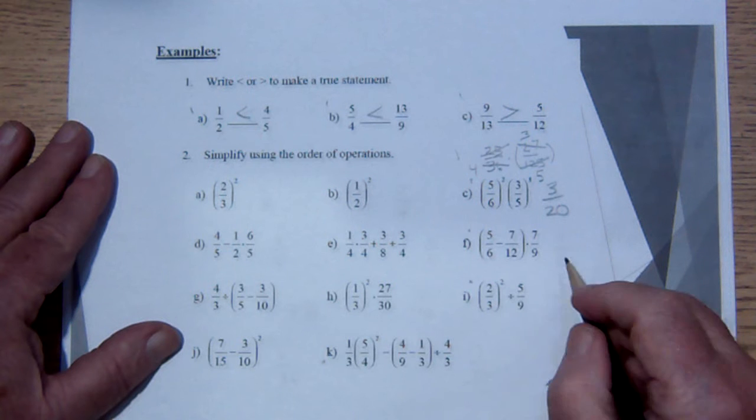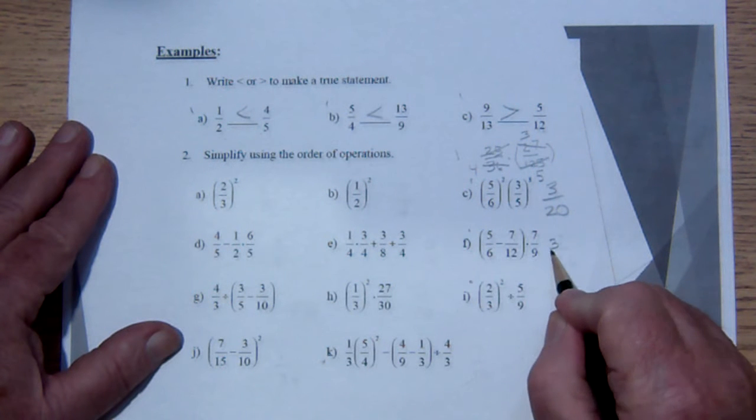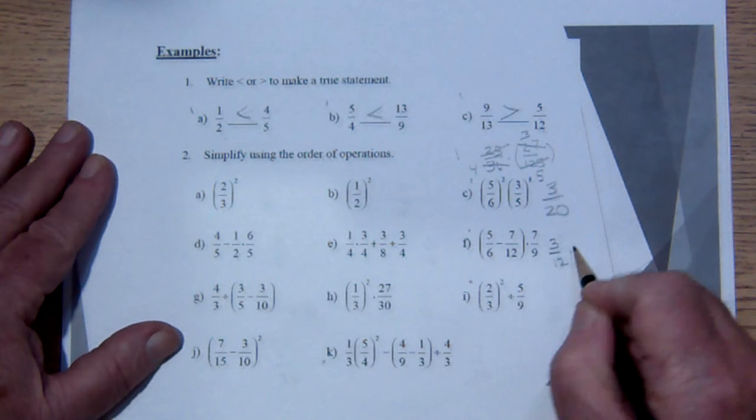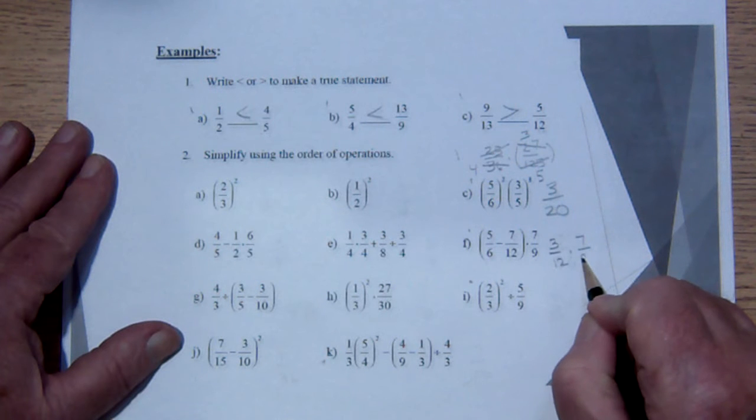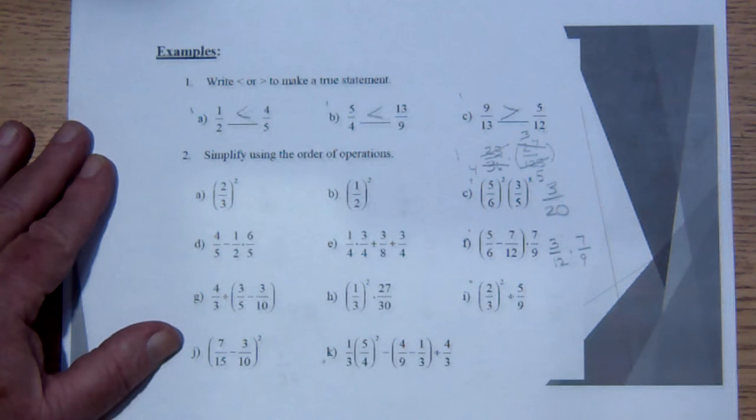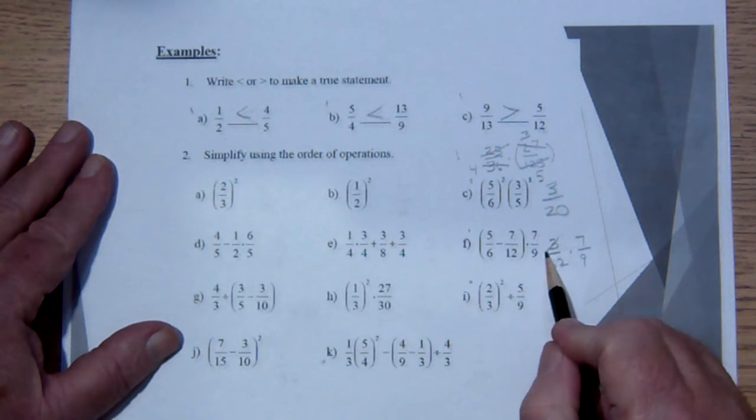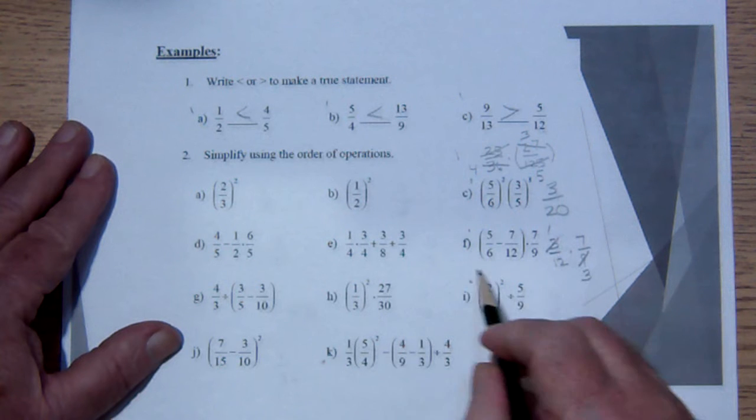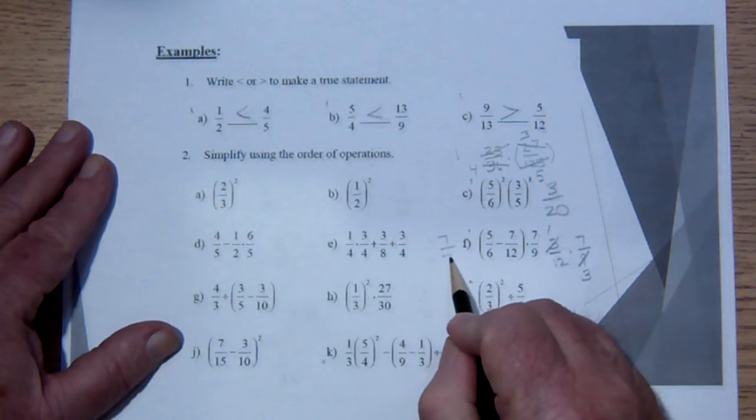Here we're going to do the subtraction first. This is going to be 10 over 12 minus 7 over 12 is 3 over 12 and we're going to be multiplying that by 7 over 9. 3 goes into 3 once, 3 goes into 9 3 times, so that is going to be 7 over 36.